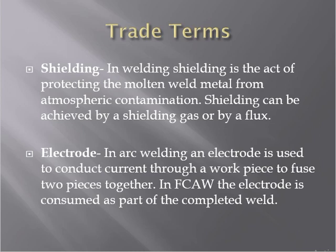Shielding in welding is the act of protecting the molten weld metal from atmospheric contamination. Shielding can be achieved by a shielding gas — such as carbon dioxide — or by flux. There are many atmospheric gases and contaminants present, so shielding is needed to make a sound weld.